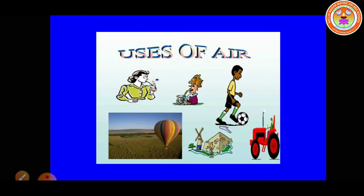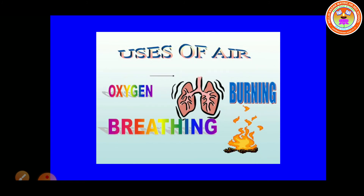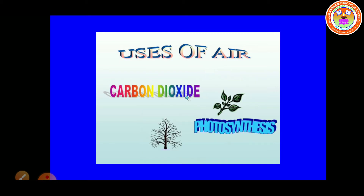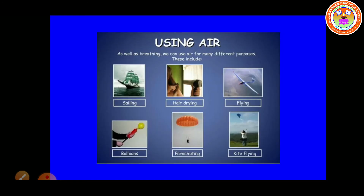And students, air is used in so many ways. For example, Oxygen gas is used for breathing and it is used in the burning process. Nitrogen gas gives fertility to soil. Carbon Dioxide is used in photosynthesis. And air is used for many other purposes like sailing, hair drying, flying, balloons, parachuting, and kite flying.